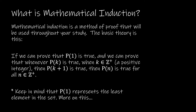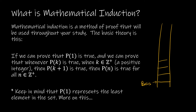Then P of N is true for all of the positive integers. It's the ladder analogy: the basis step proves that we can get to the first rung of the ladder. The inductive step — which is why it's called mathematical induction — says if I can get to some arbitrary K value, and I know that from K I can get to K plus 1, the next rung, then I have proved that I can get to all of the rungs.